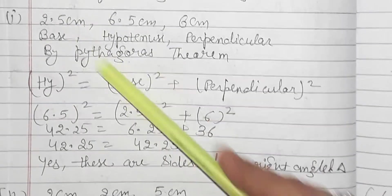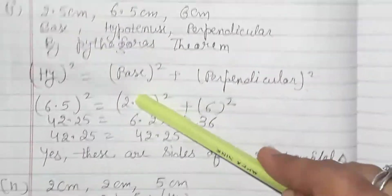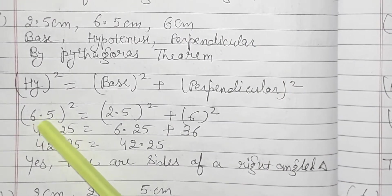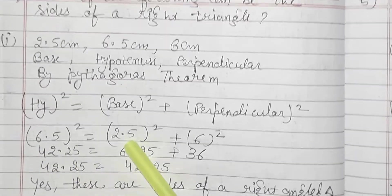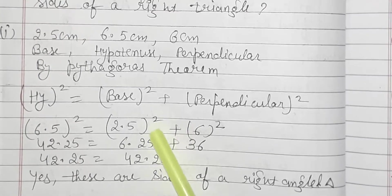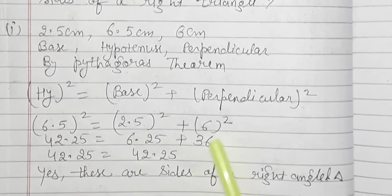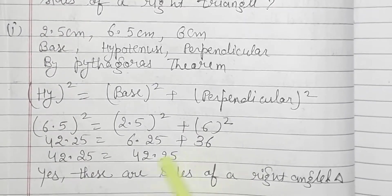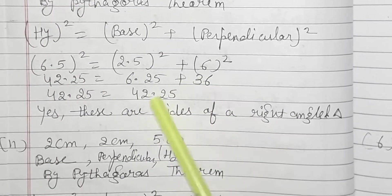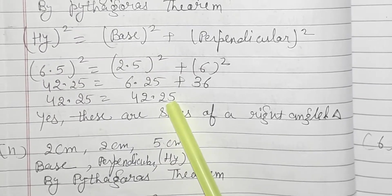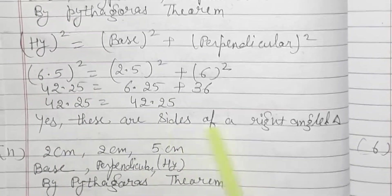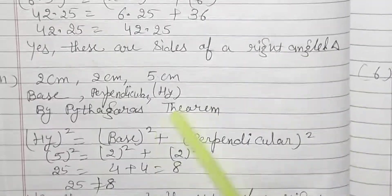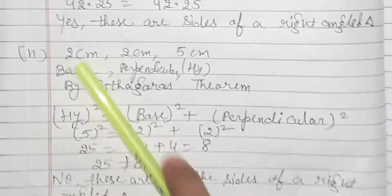6.5 × 6.5 = 42.25. Then 2.5 × 2.5 = 6.25, and 6 × 6 = 36. Adding these two: 6.25 + 36 = 42.25. The left-hand side and right-hand side are both the same. Yes, these are the sides of a right angle triangle.